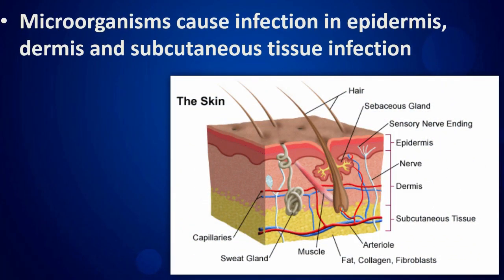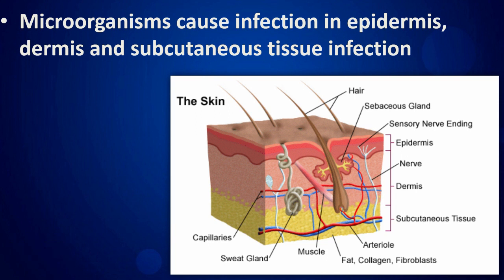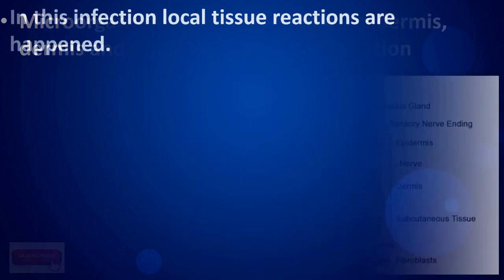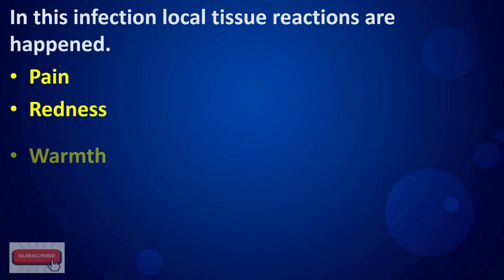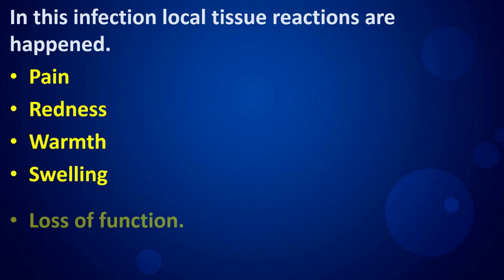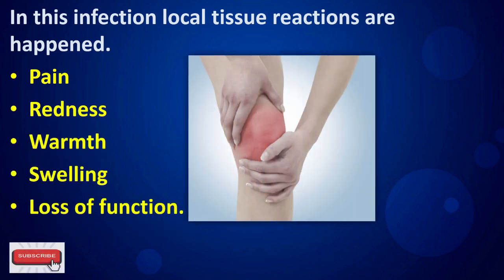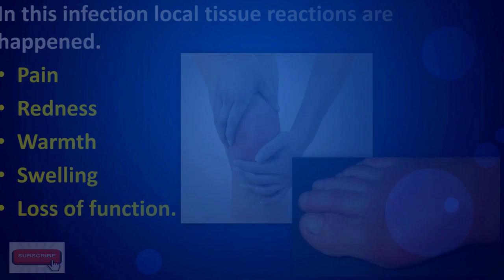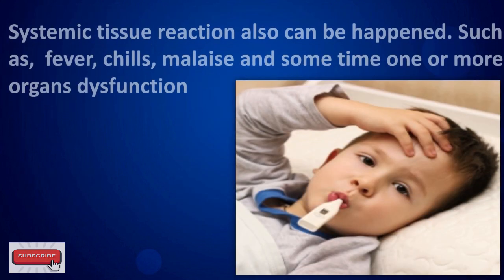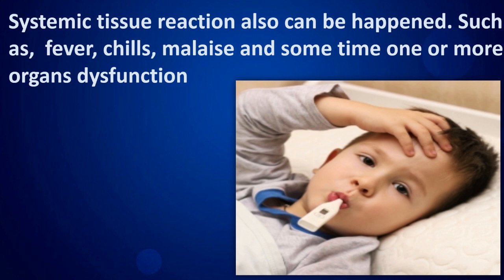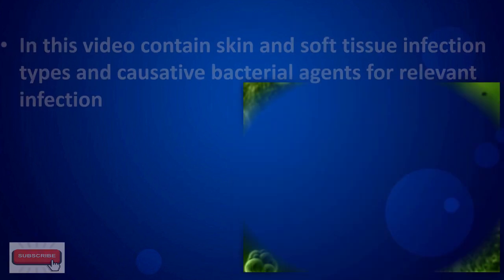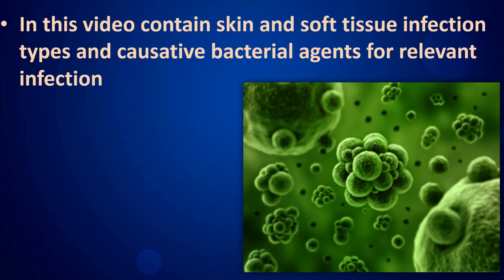Microorganisms cause infection in the epidermis, dermis, and subcutaneous tissue. Local tissue reactions include pain, redness, warmth, swelling, and loss of function. Systemic tissue reactions can also occur, such as fever, chills, malaise, and sometimes one or more organ dysfunction. This video covers skin and soft tissue infection types and causative bacterial agents.